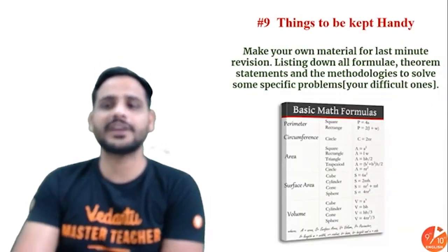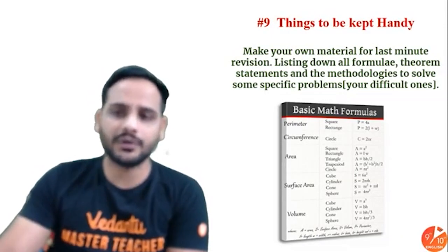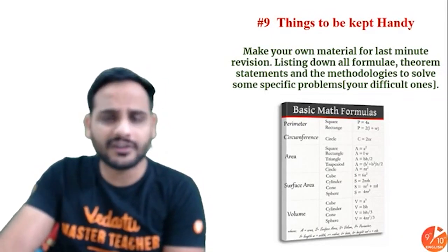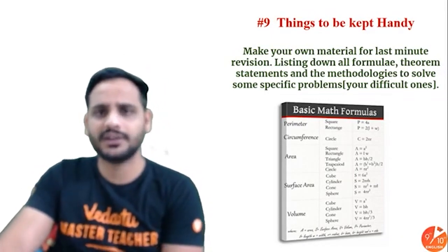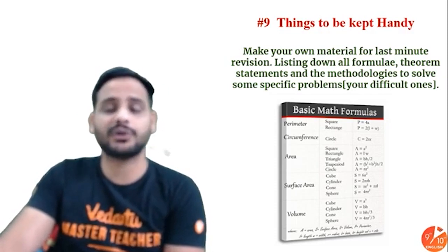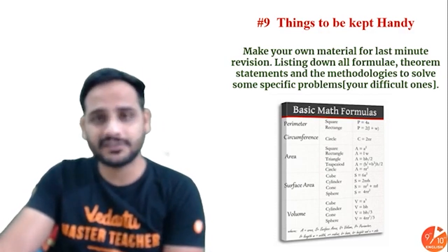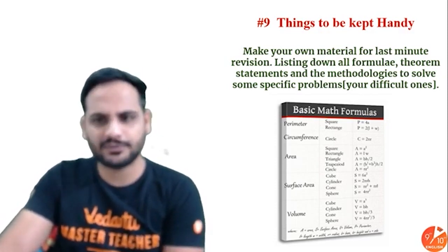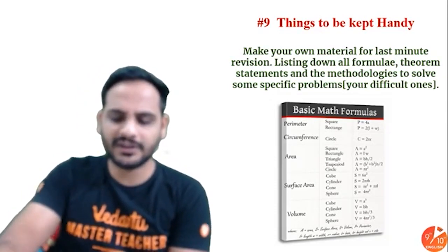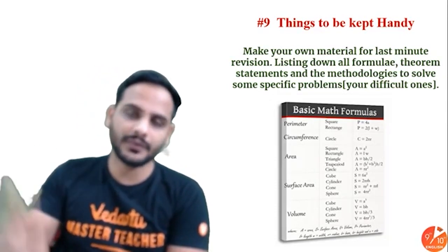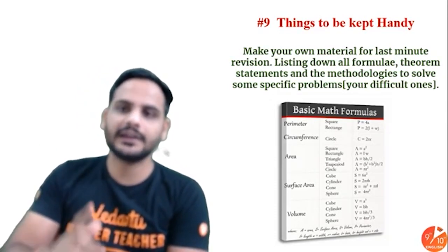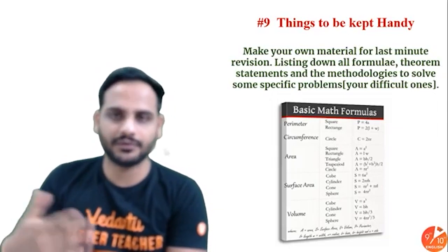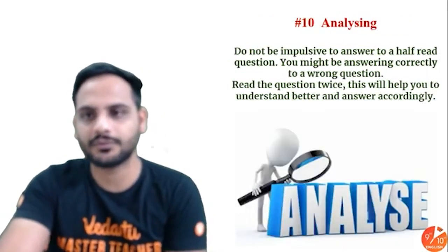The ninth tip is things to be kept handy. When studying mensuration, there are many formulas — they are usually given at the end of NCERT. You can write all the identities and formulas on one single page in your own way. This is very handy during end-moment revision — you can quickly revise all formulas at once.